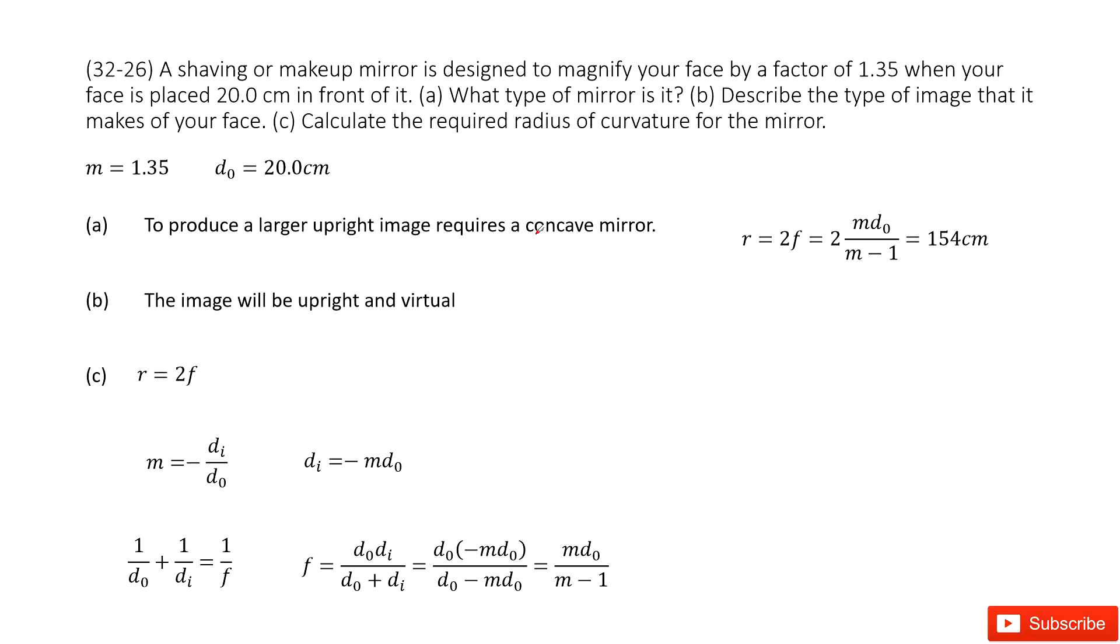Chapter 32 is about light and reflection. We have a makeup mirror with a magnification of 1.35 and an object distance of 20 cm in front of the mirror.